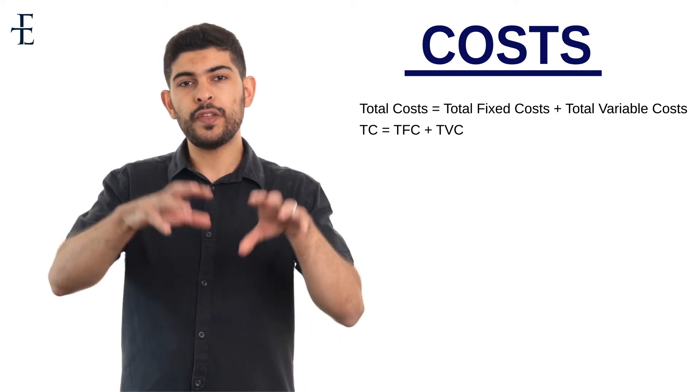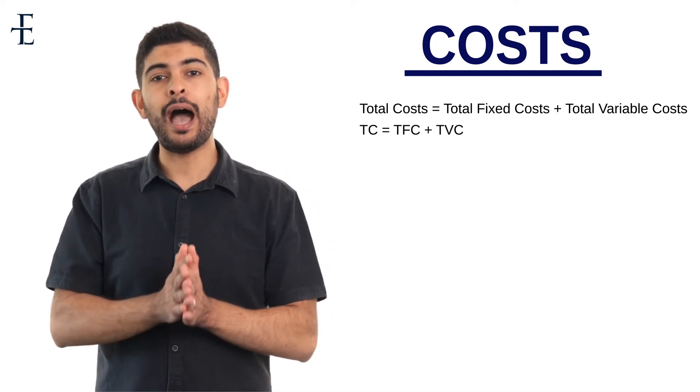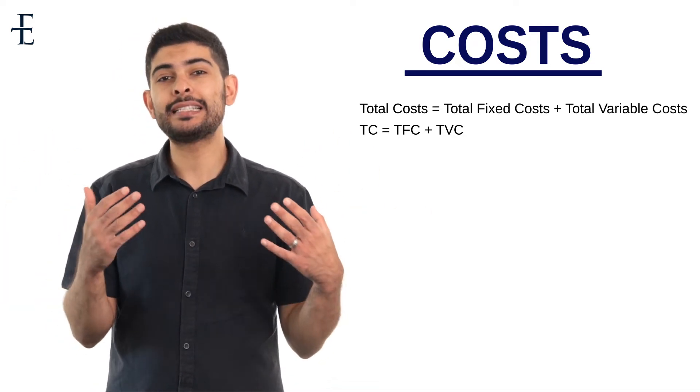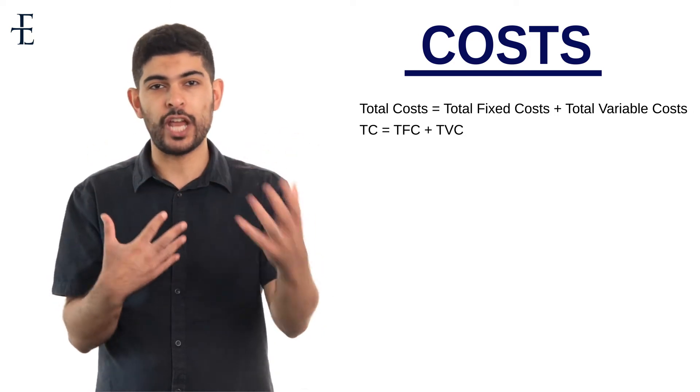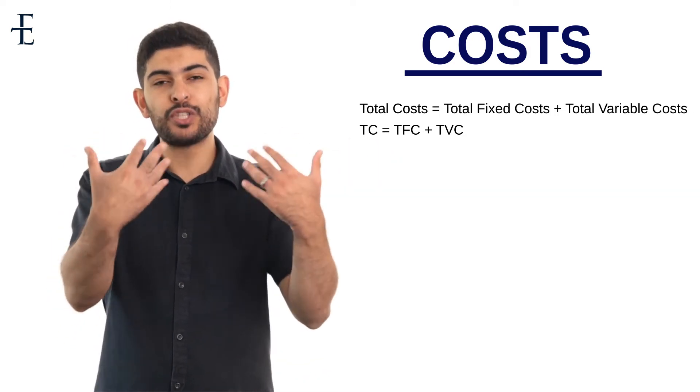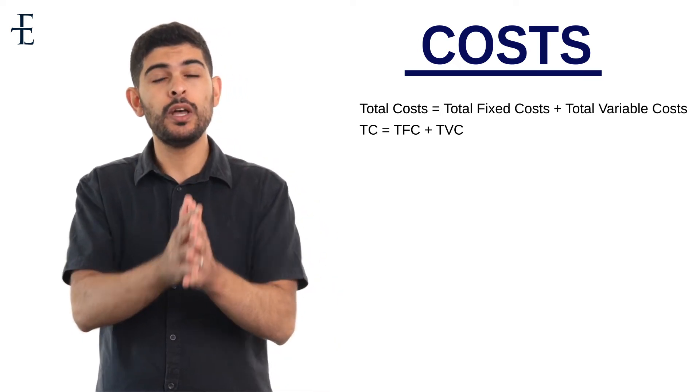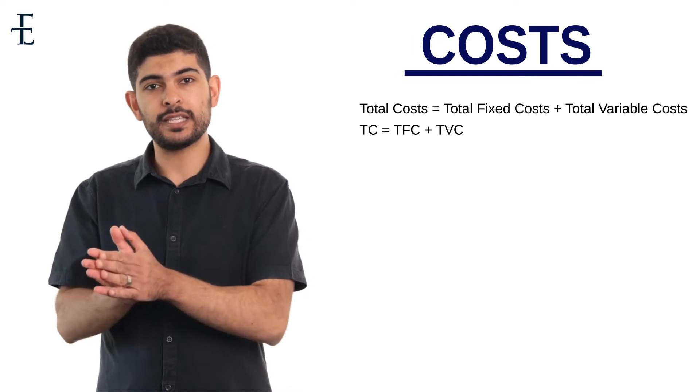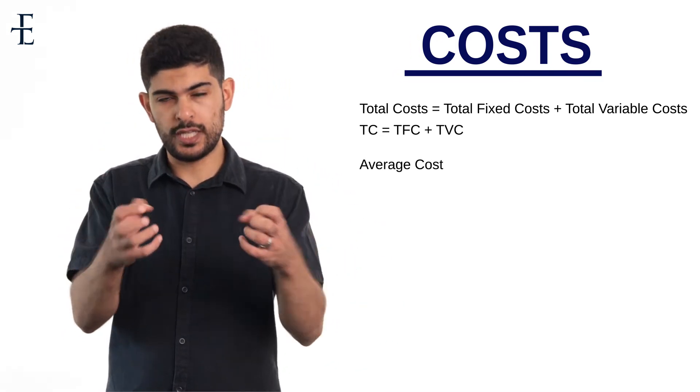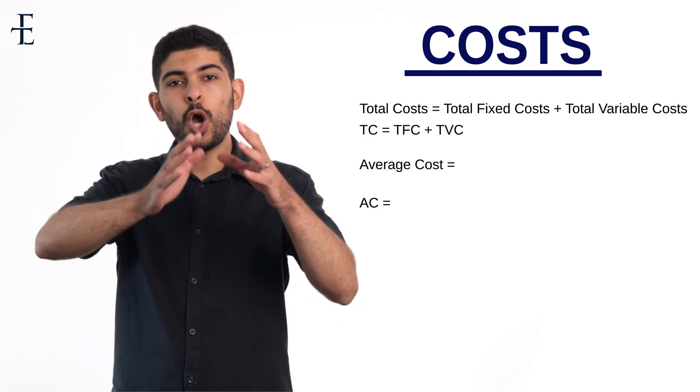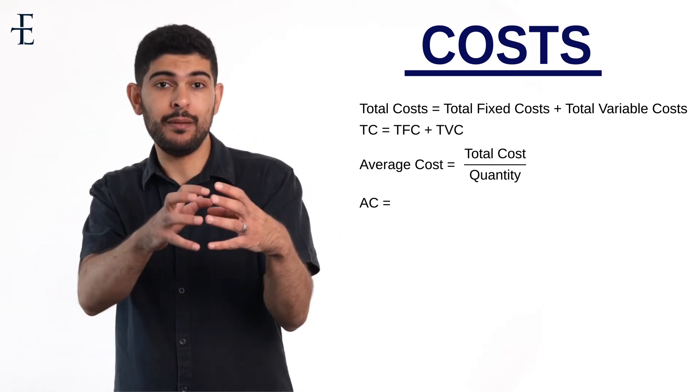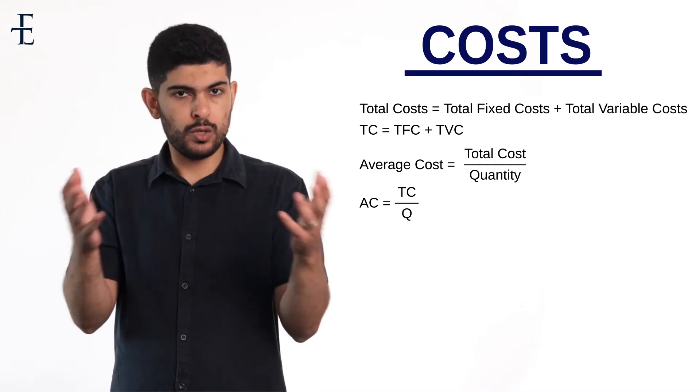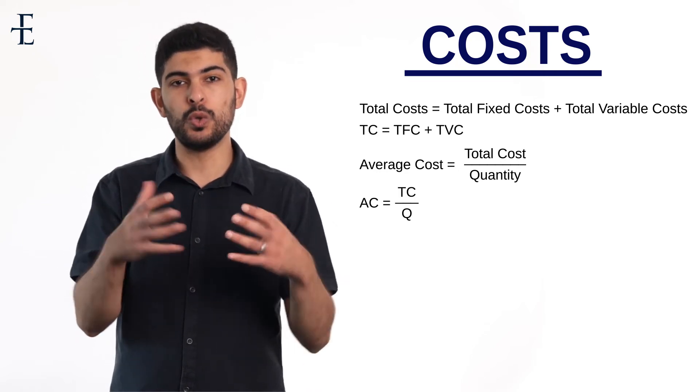A few things that you need to be able to always figure out in an exam are averages. Throwback to year nine maths. How would I calculate an average generally? For example, if I want to calculate our average age, I would add our ages together to get a total and divide it by the number of people. In this context, if I wanted to calculate average cost, AC, all you do is take the total of that particular concept and divide it by quantity. In other words, AC is simply equal to TC, total cost, divided by Q, quantity.